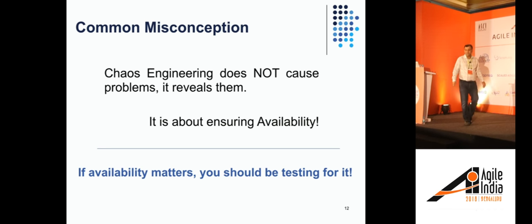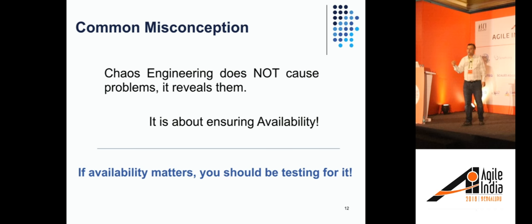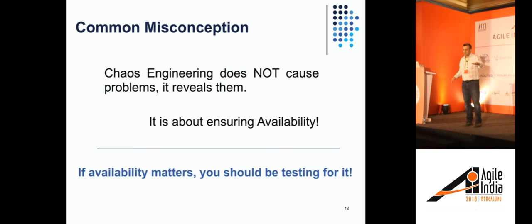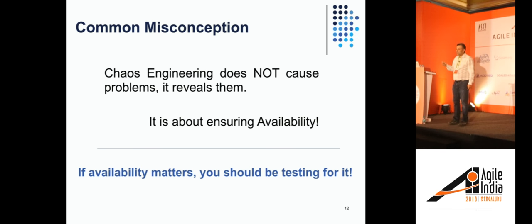A common misconception is that Chaos Engineering is about causing chaos. That's not the end goal. Chaos Engineering is not about causing problems — it's about revealing problems. You already have problems in your system; everyone does. There's no such thing as a perfect system. Chaos Engineering reveals those problems. If availability matters in your system, you should be testing for it. Often the name 'Chaos Engineering' sounds counterintuitive — if you tell an executive 'we're going to test your system by blowing up a couple of instances in production,' I'm not sure the CTO would really buy it.